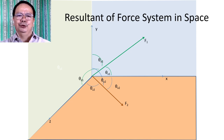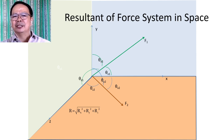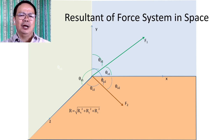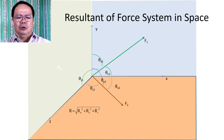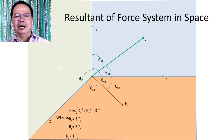We want to compute the magnitude and direction of the resultant of this concurrent force system in space. According to the concept, the resultant can be computed using the formula R = √(Rx² + Ry² + Rz²), where Rx is the summation of forces along the x-axis, Ry is the summation of forces along the y-axis, and Rz is the summation of forces along the z-axis.